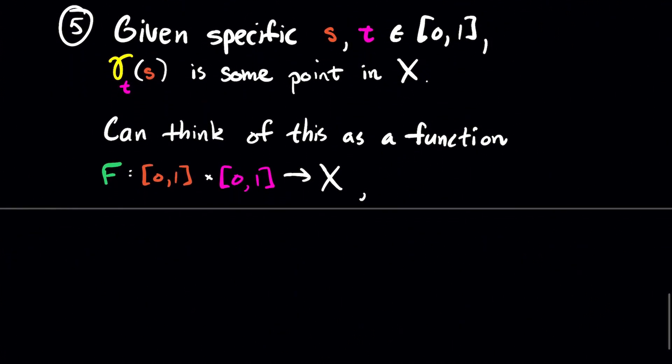And so it takes inputs in the Cartesian product of the unit interval with itself, [0,1] times [0,1]. I have tried to color these. So the first copy of [0,1] is going to be my S values, and the second copy of that interval is going to be my T values.